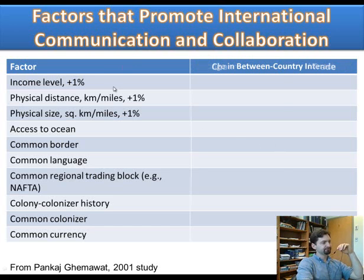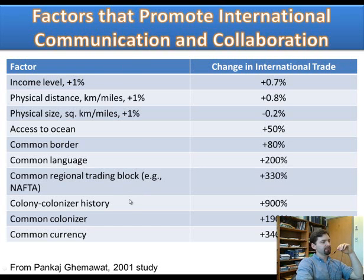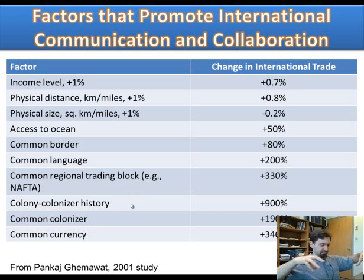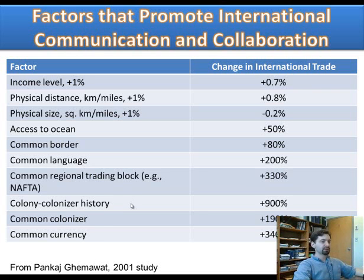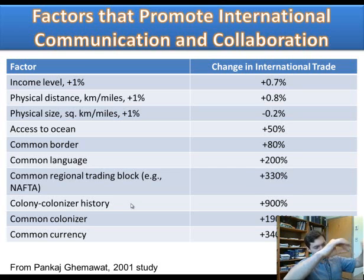The biggest predictor is colony-colonizer history. The United Kingdom trades much more with its former colonies, and the same applies to having a common colonizer. The colonial metropole built relationships among its colonies in such a way that all roads led to Rome — and even though the Roman Empire no longer exists, much of the trade still occurs along those infrastructure paths built by empires.